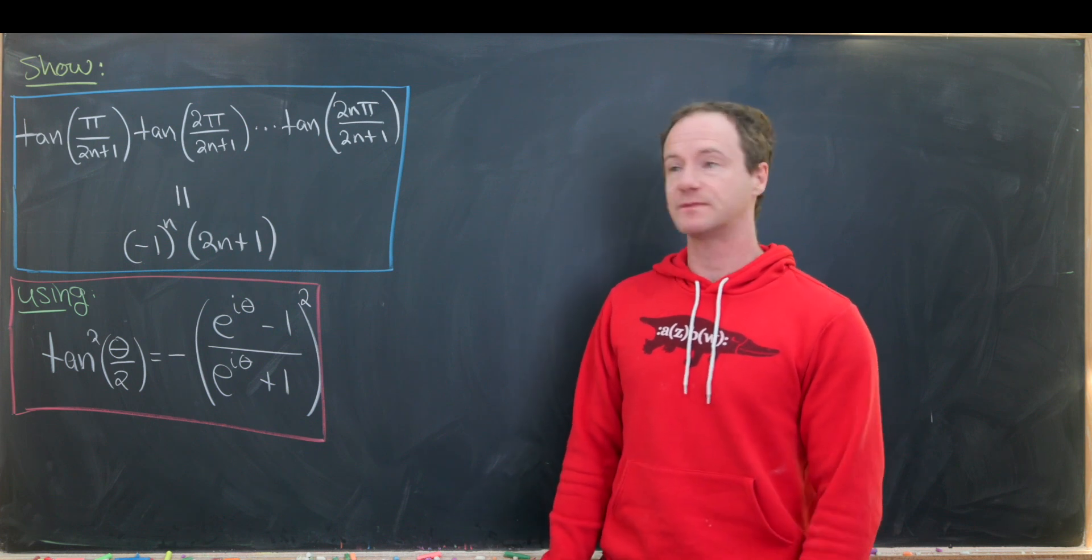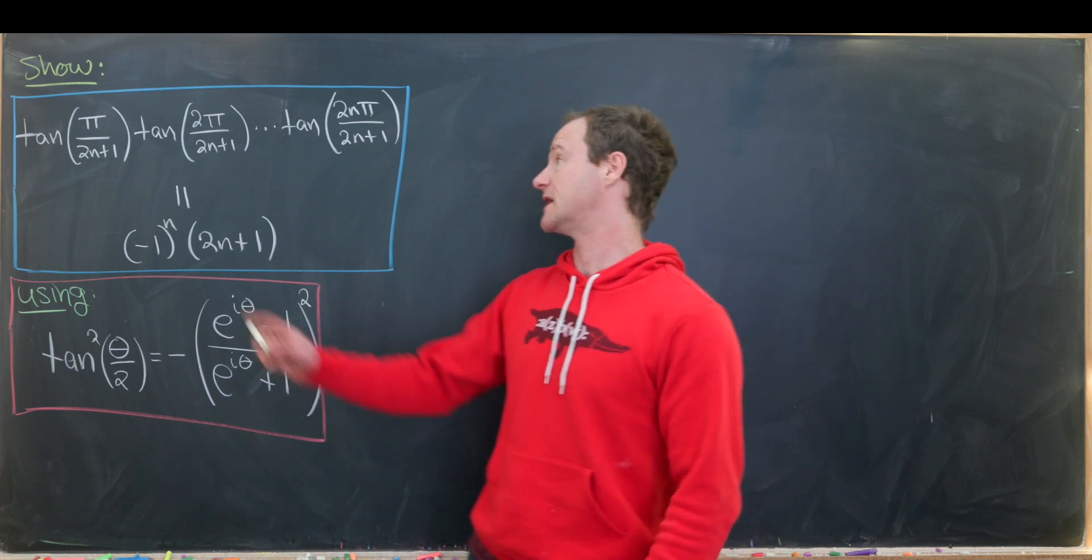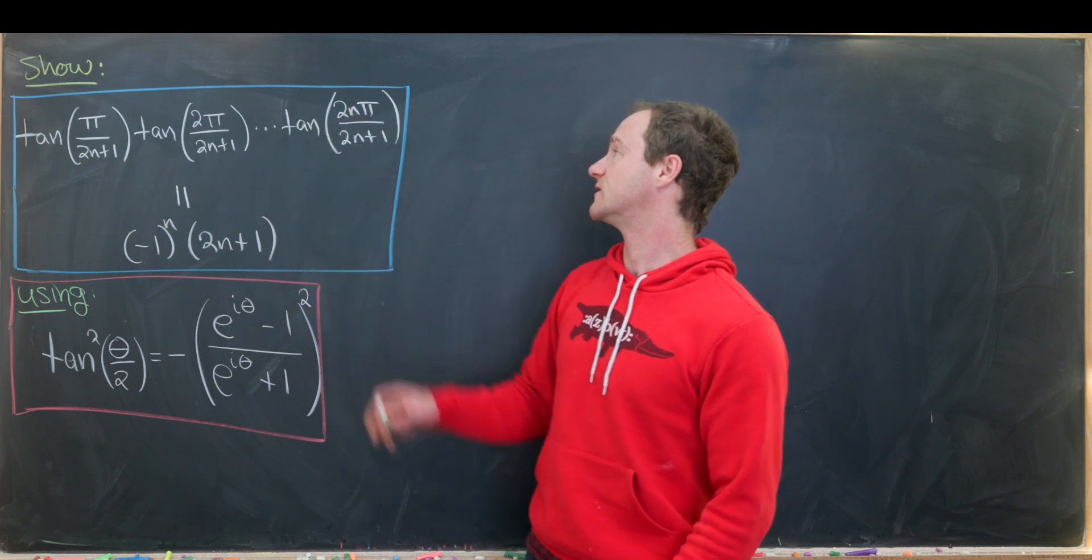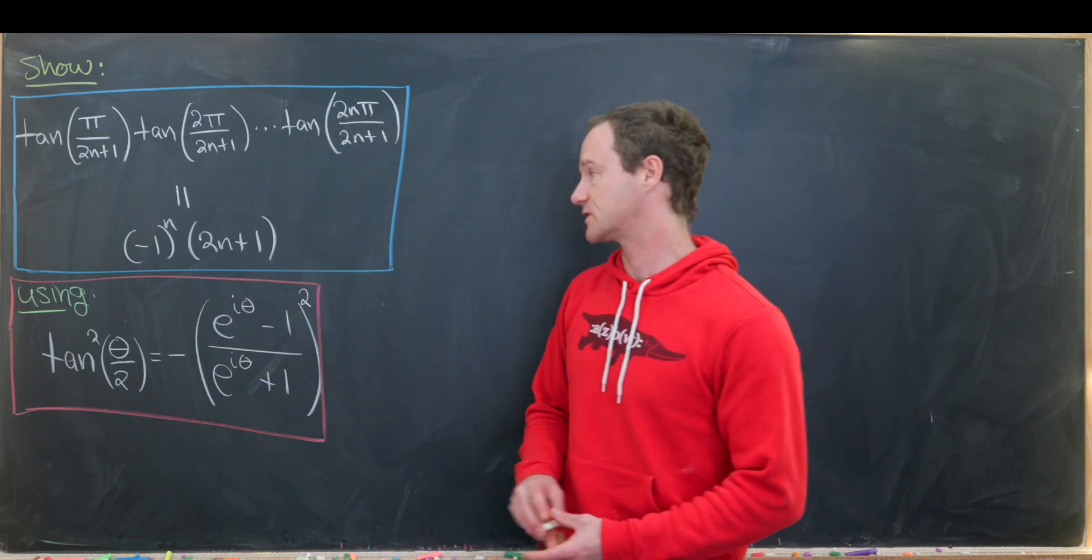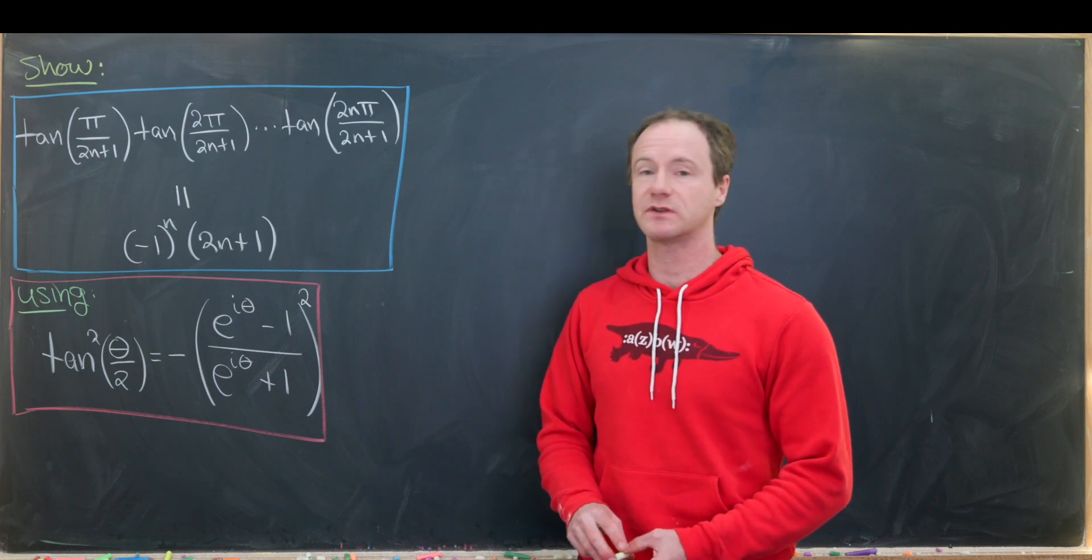So what we'll end up showing here is that the tangent of π over 2n plus 1 times the tangent of 2π over 2n plus 1 all the way up to the tangent of 2nπ over 2n plus 1 is equal to minus 1 to the n times 2n plus 1.